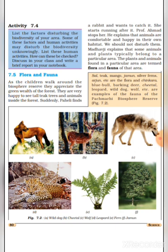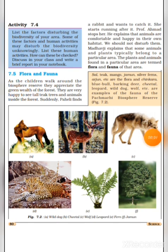Saal, Saagun, Aam, Jamun, Silver Ferns, Arjun etc. vanasapati jat hain. Chikara, Neel Gai, Barking Hiren, Cheetal, Tendua, Jungli Kutta, Bhediya etc. Pachmari Jaivik Mandal Arakshit Chetra ke pranijat hain. Diagram A mein Wild Dog hai, B mein Cheetal — iske bade-bade sing hain, C mein Wolf means Bhediya, D mein Leopard means Tendua, E mein Fern ke paudhe, aur F mein Jamun ke paudhe dikhaye gaye hain.